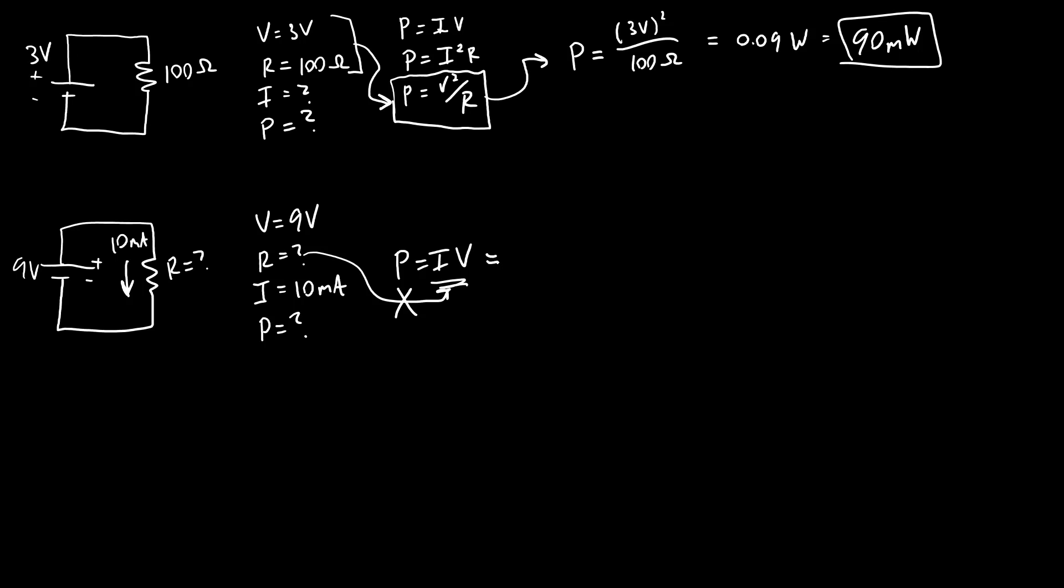All you have to do is plug in your values. Remember, 10 times nine, be careful with your units. Milliamps, so that's not a 10, it's 10 times 10 to the negative three, or you can write that out as 0.01 amps times nine volts. Always be careful with your units. That is also going to give us 90 milliwatts.